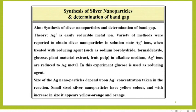Aim: Synthesis of Silver Nanoparticles and Determination of Band Gap. Theory: Ag plus is an easily reducible metal ion. A variety of methods have been reported to obtain silver nanoparticles in solution state. Ag plus ions, when treated with a reducing agent such as sodium borohydride, formaldehyde, glucose, plant material extract, or fruit pulp in alkaline medium, are reduced to Ag metal. In this experiment, glucose is used as the reducing agent. The size of Ag nanoparticles depends upon the Ag plus concentration. Small size silver nanoparticles have yellow color, and with increase in size they appear yellow-orange and orange.